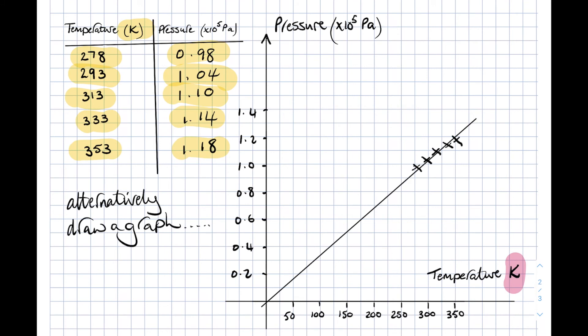And our last point, 353, 1.18. Gives us a straight line through the origin. So P over T is a constant. And again, P1 over T1 equals P2 over T2. That's the pressure law.